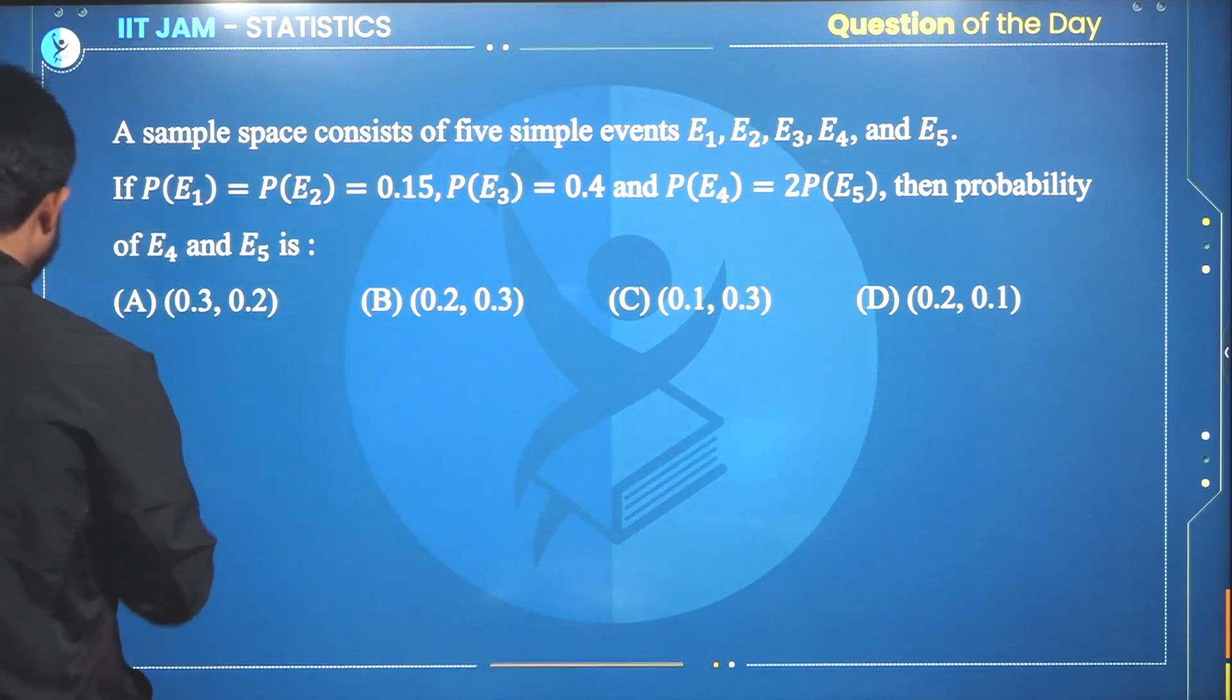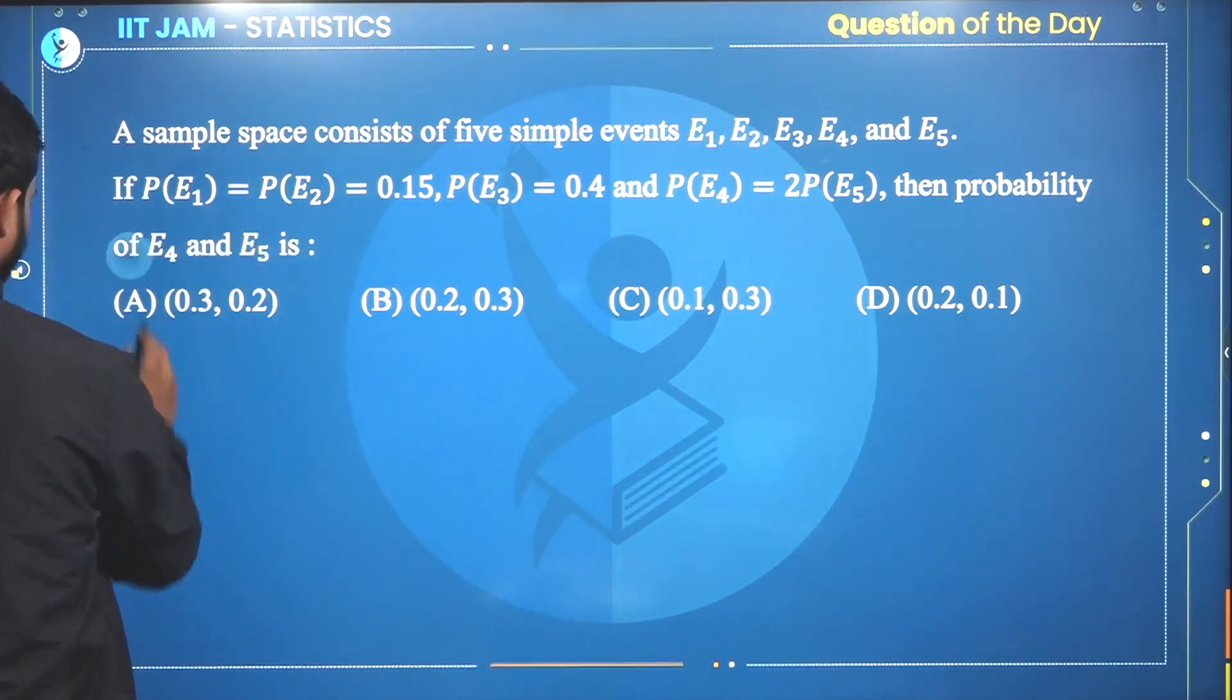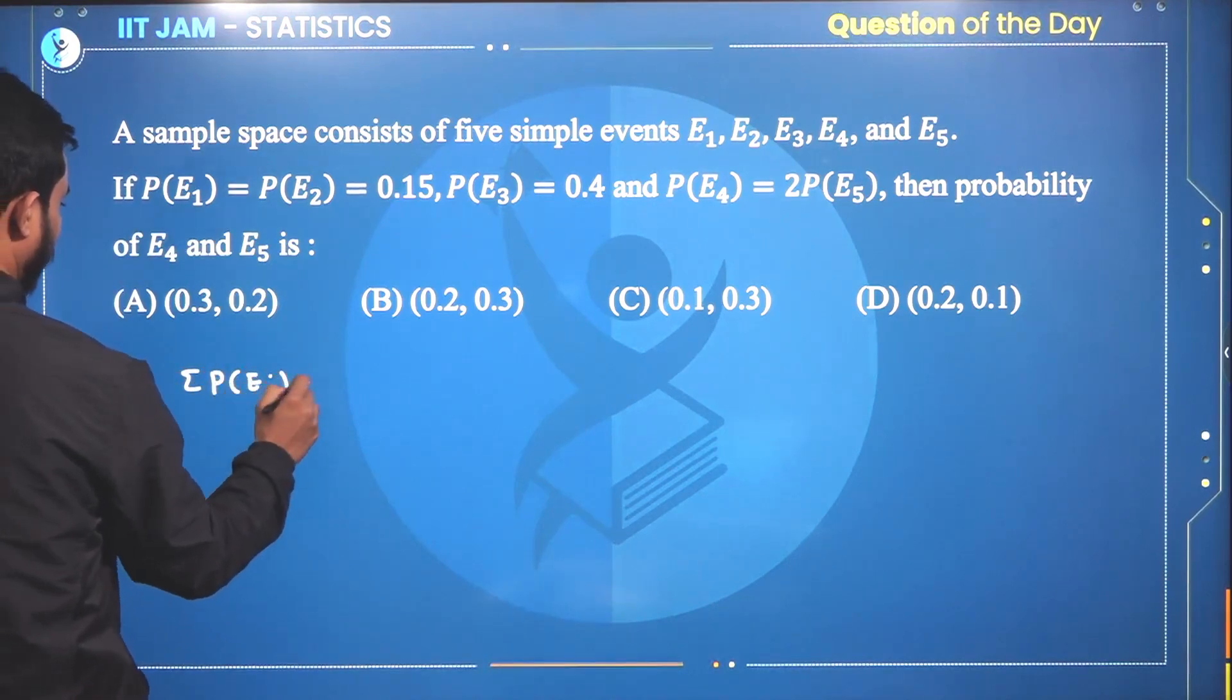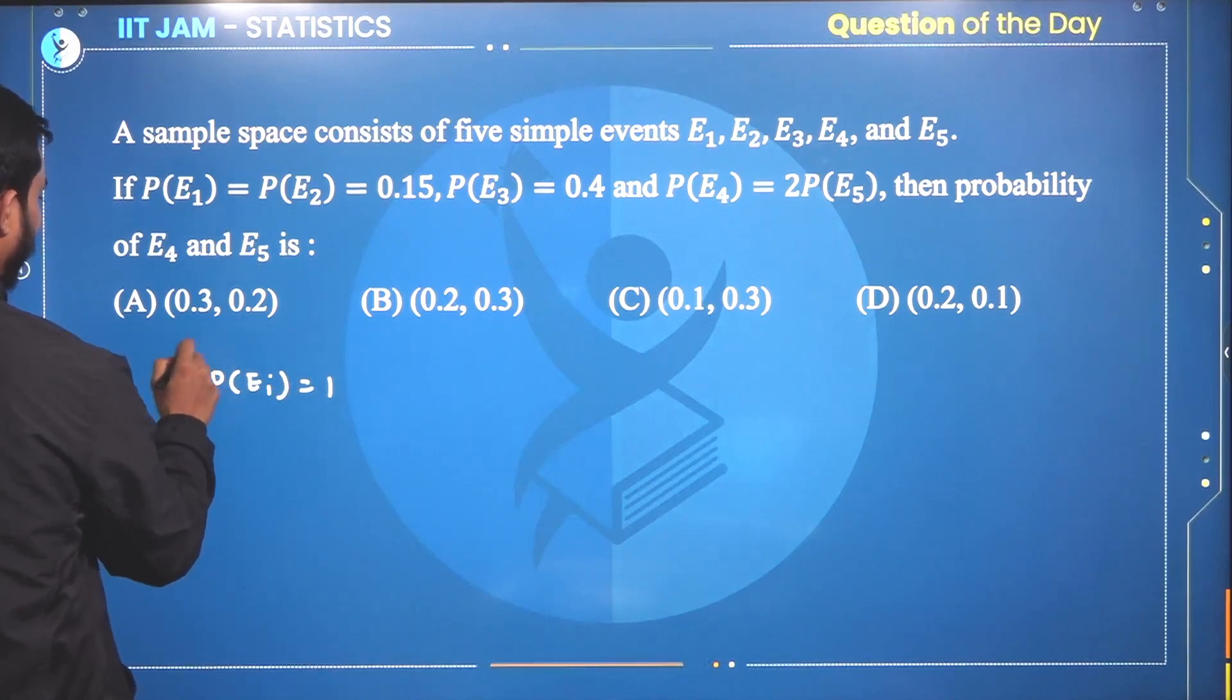Basically, we know the probability condition. What is the condition of probability? The summation of probabilities equals 1. So, the summation of probability of E_i equals 1, where i equals 1 to n.